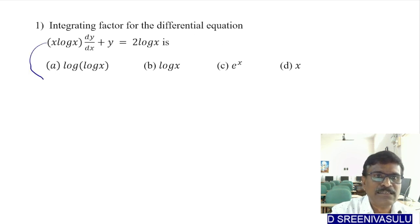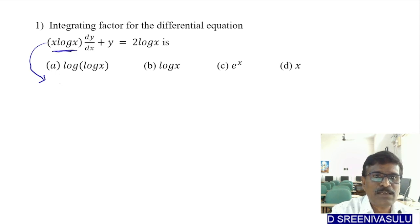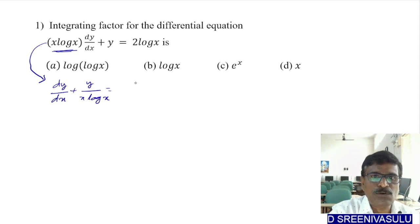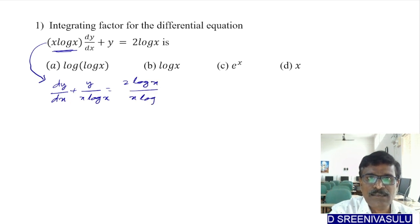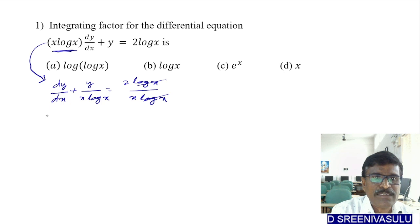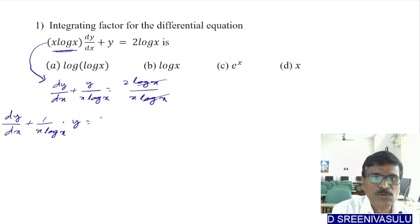Given equation: x·log(x)·dy/dx + y = 2·log(x). Divide the entire equation by x·log(x). Then: dy/dx + y/(x·log(x)) = 2·log(x)/(x·log(x)). The log(x) terms cancel, giving dy/dx + (1/(x·log(x)))·y = 2/x.